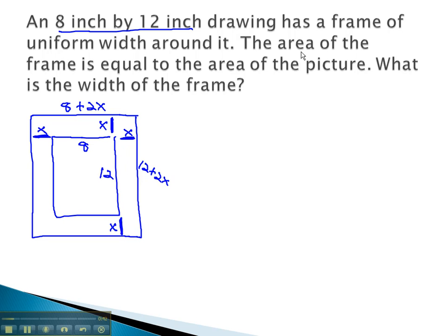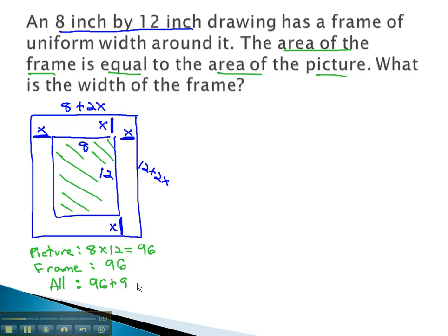We are told that the area of the frame is equal to the area of the picture. We'll have to do a little work to find out what this will be. The picture itself is an 8 by 12 rectangle. 8 times 12 is equal to 96. The picture has an area of 96, which means the frame, being the same, must also have an area of 96. All of it together in the large rectangle, then, would be the picture 96 plus the frame 96, giving us 192.